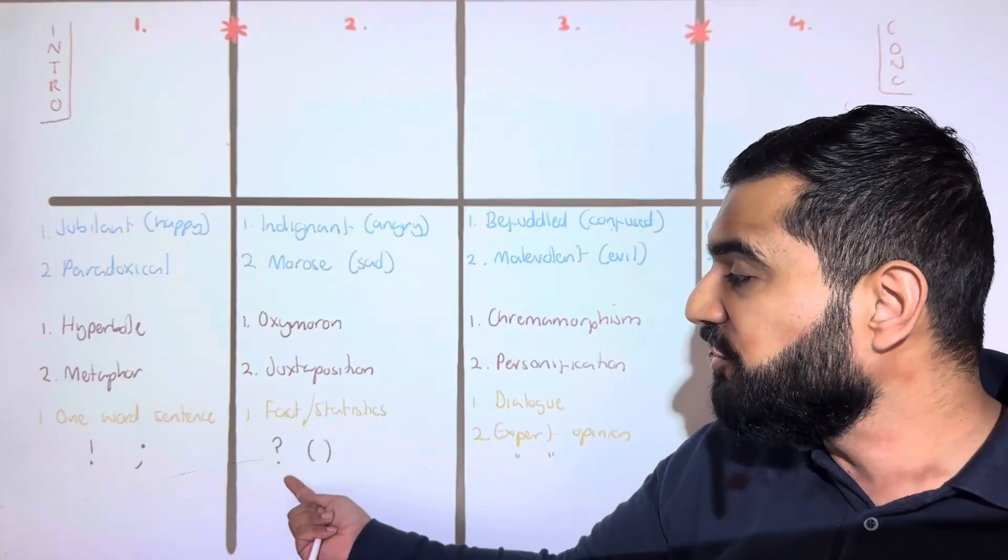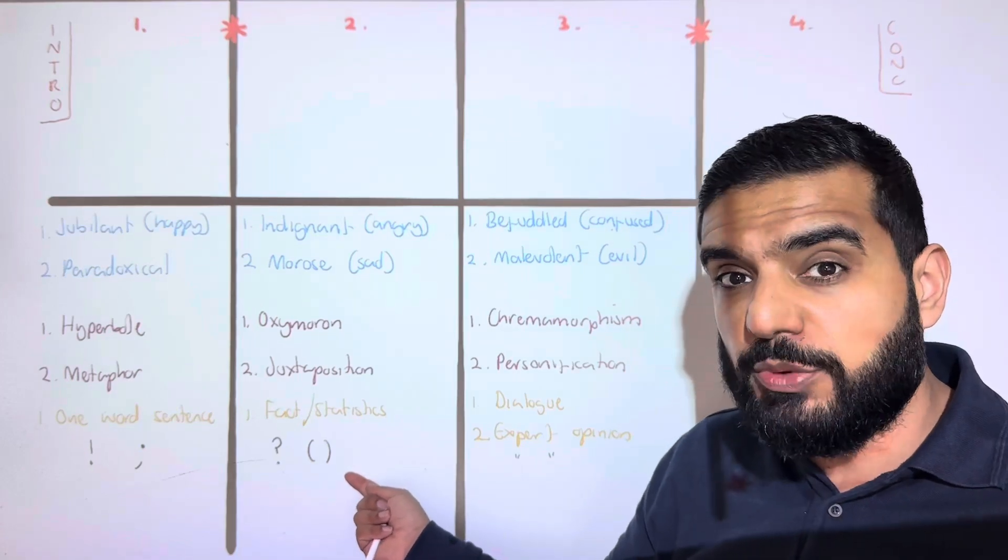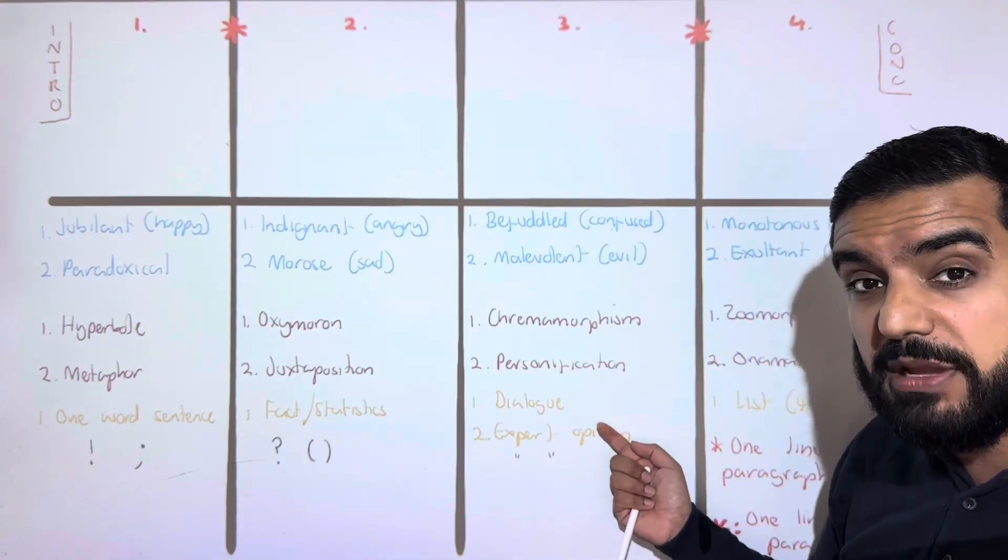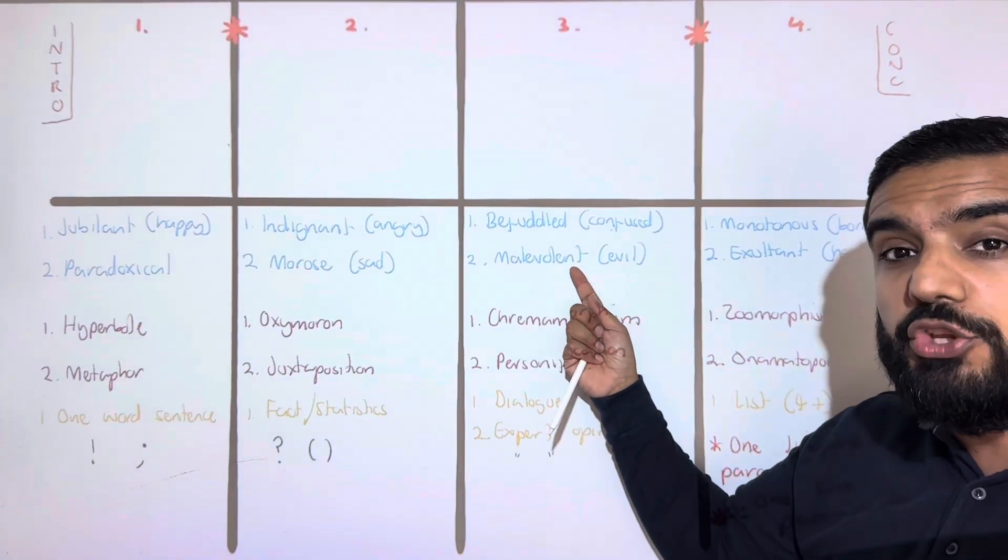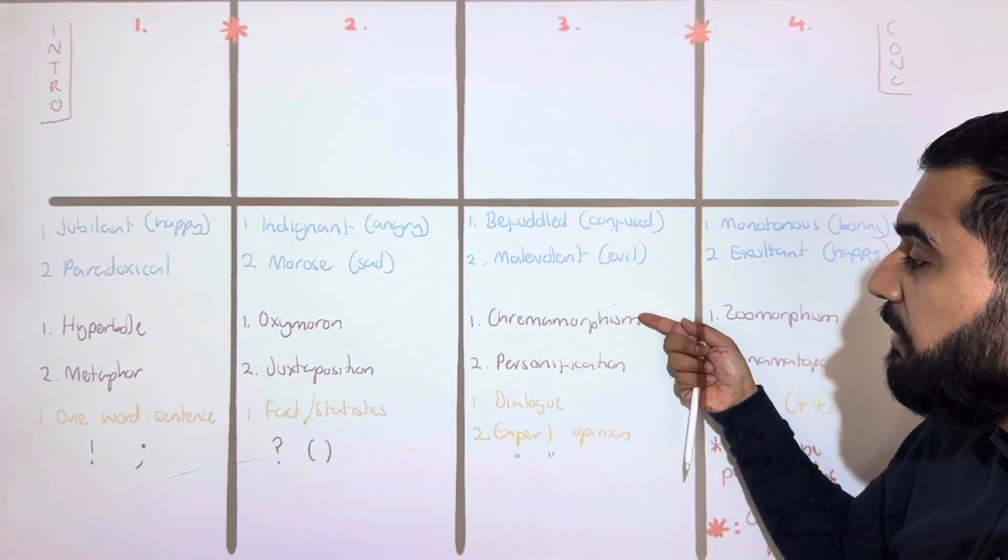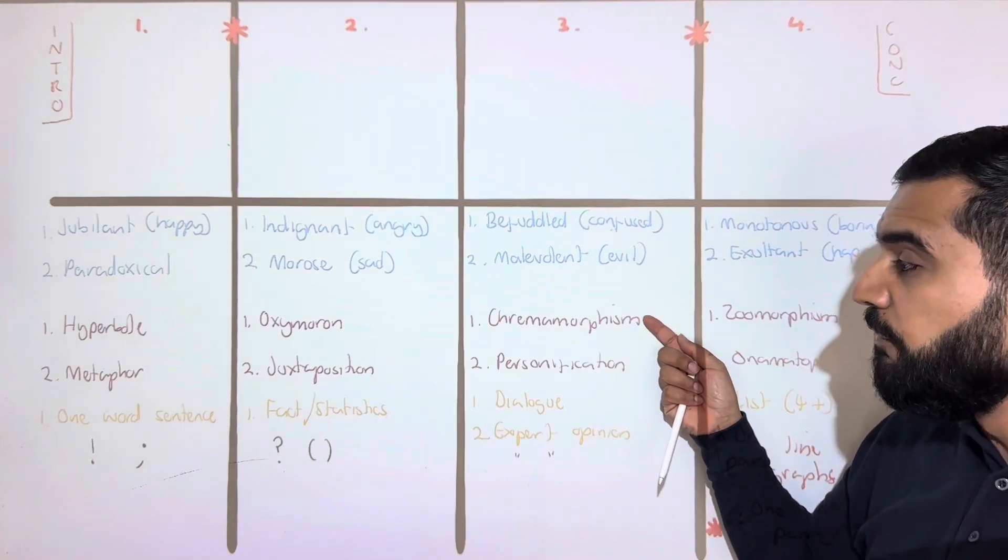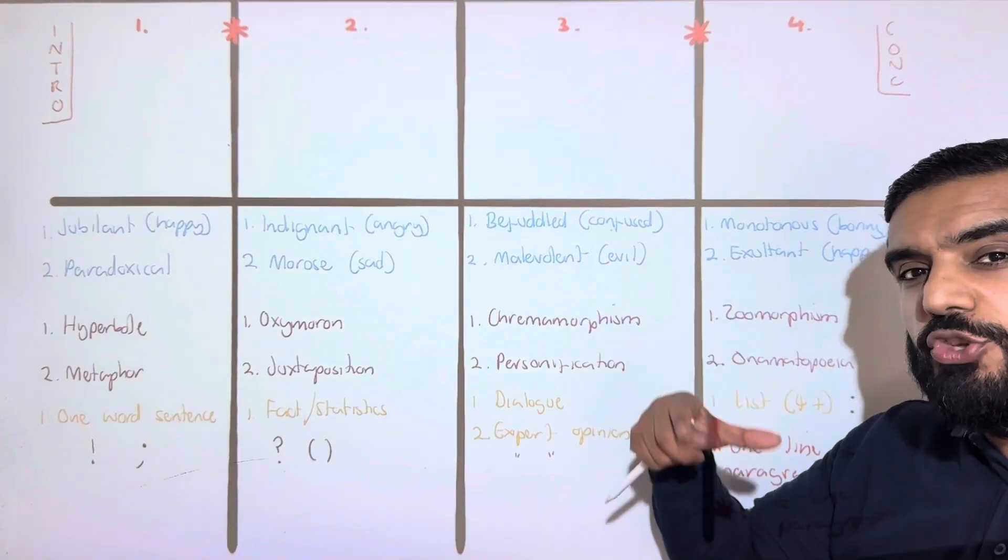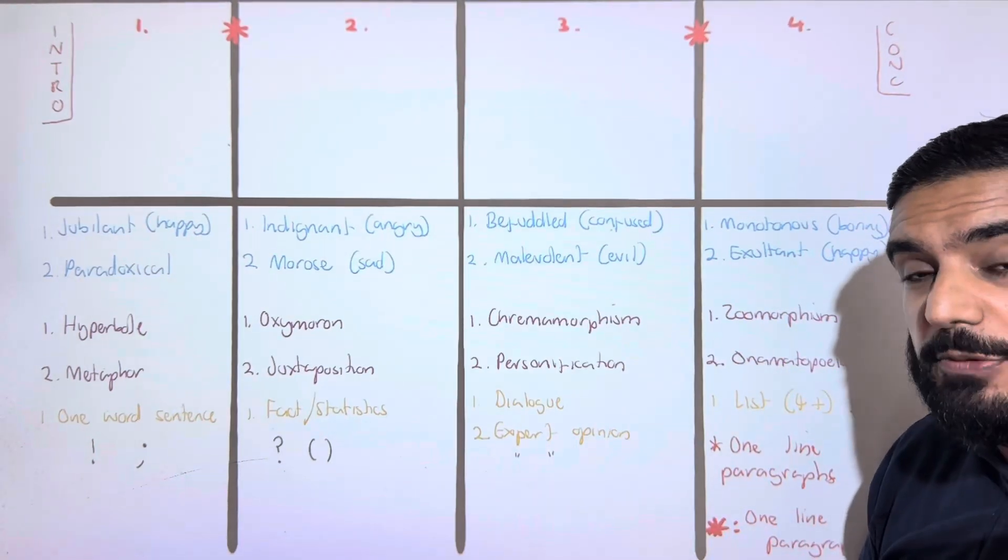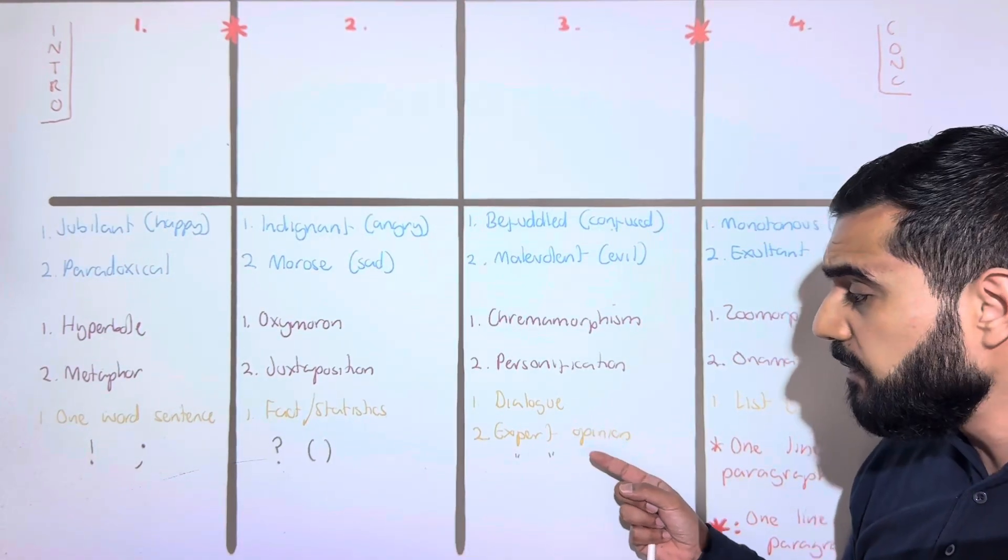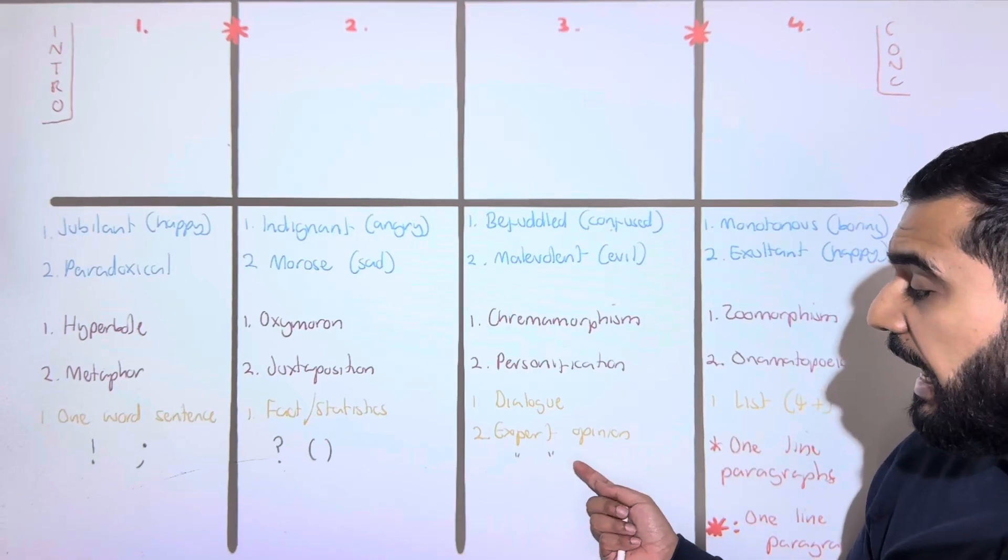Then we do our third main paragraph. For the word confused, use befuddled; for the word evil, use malevolent. Then use zoomorphism and personification. Zoomorphism is when you give a human non-human features—it's the opposite of personification. For structure, use dialogue and an expert opinion, and we're going to use speech marks for punctuation.